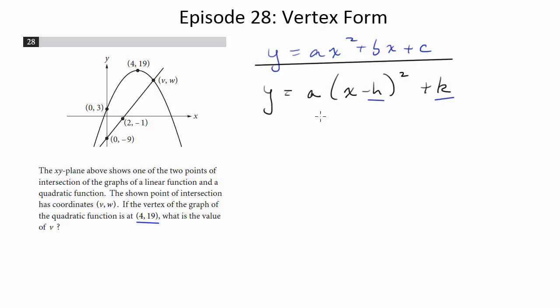This point, (h,k), is the vertex. So in this question, we know the vertex is 4,19. We're going to plug those numbers into our vertex form. The a we don't quite know yet, so we're going to have to hold off on that. The a is essentially the same a as in standard form, but we will hopefully find that out.